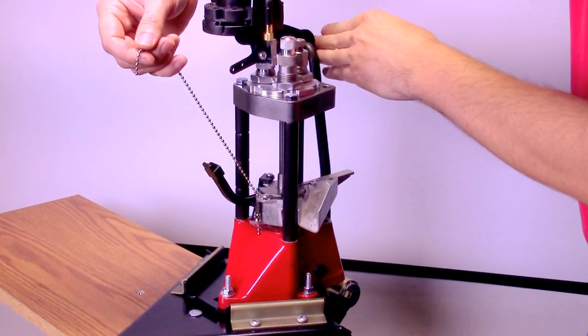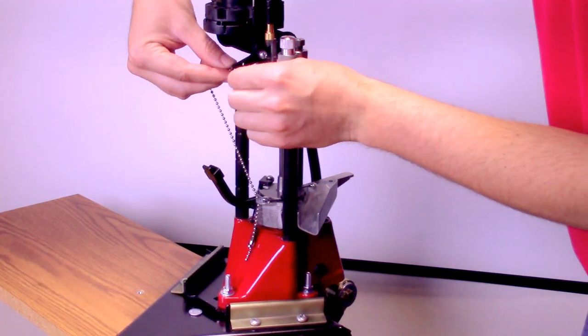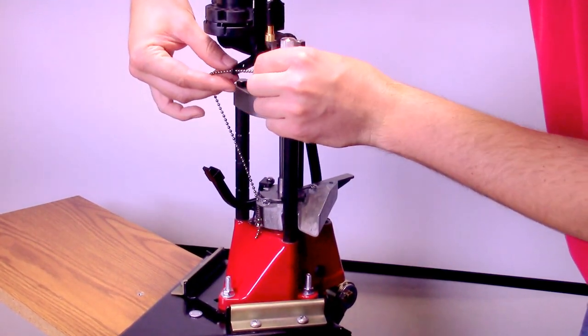With the carrier in the down position, thread the chain through the outermost hole in the actuator lever.